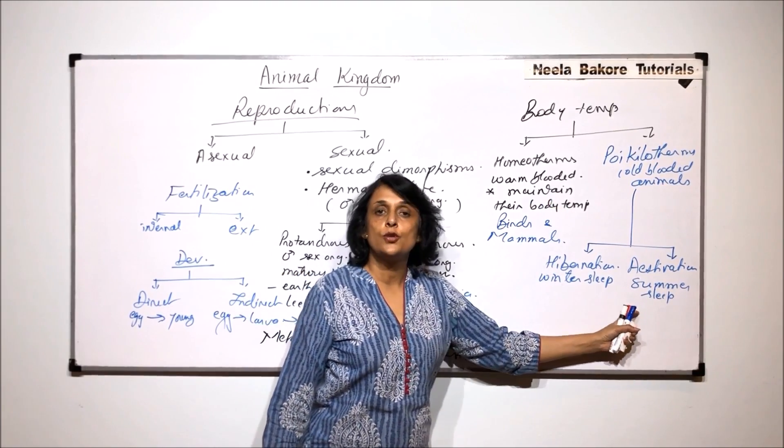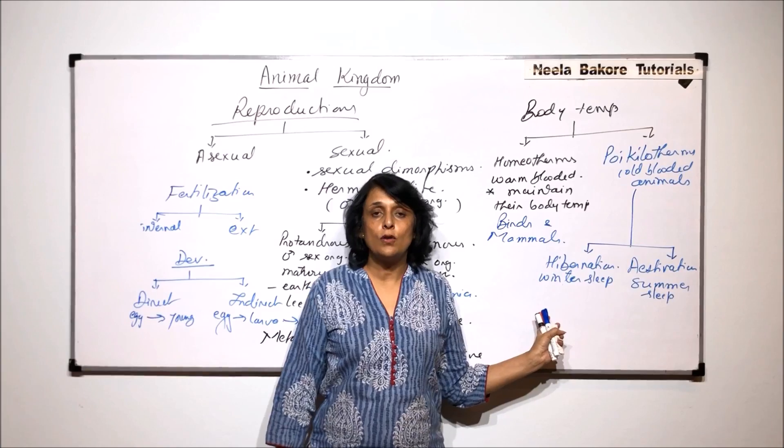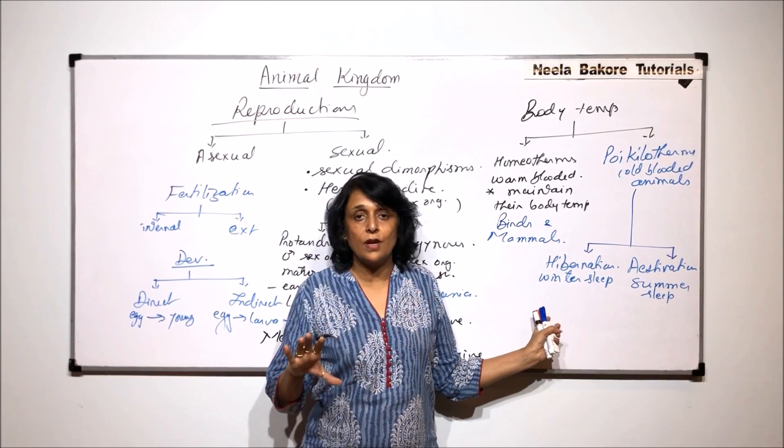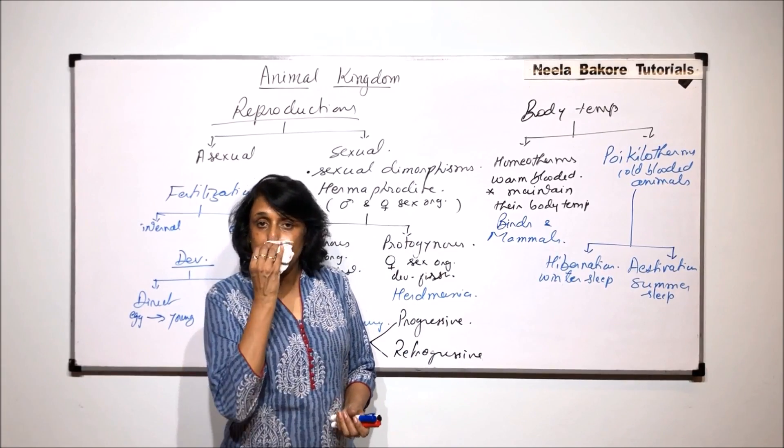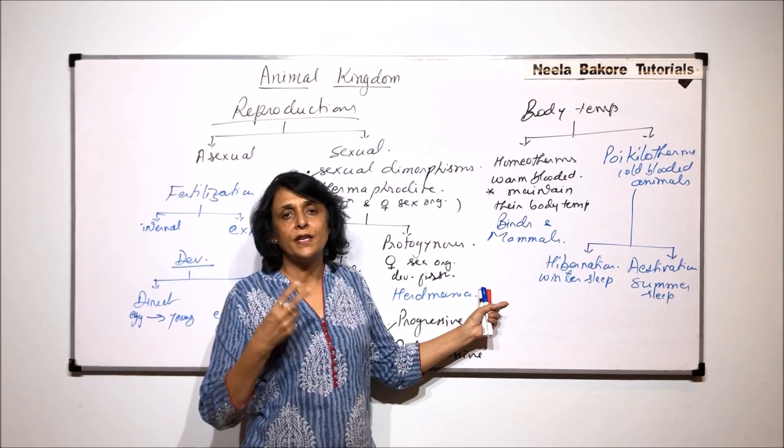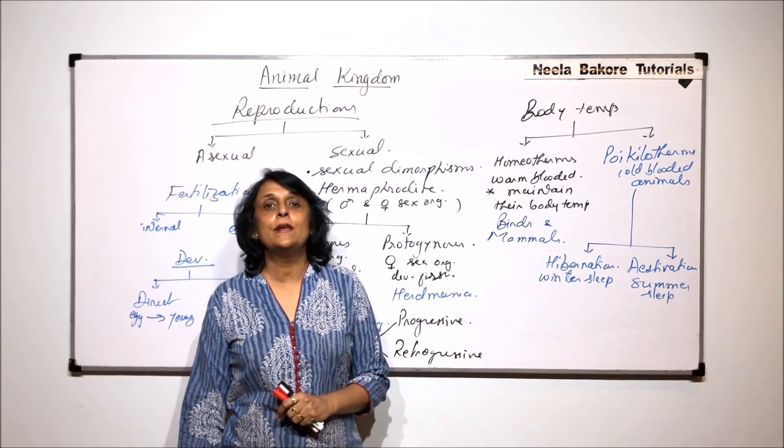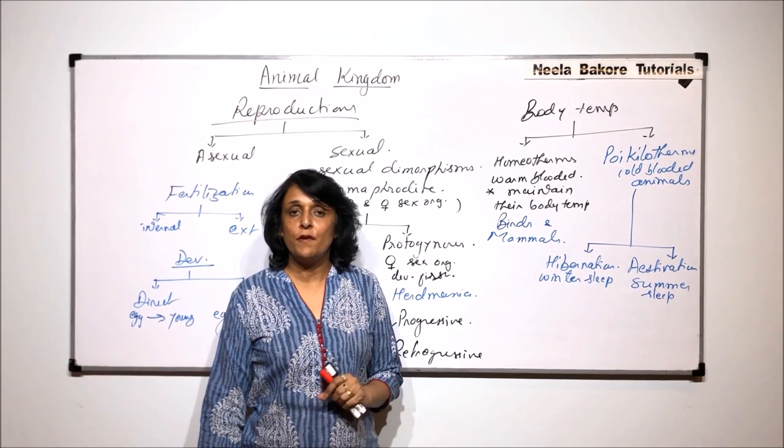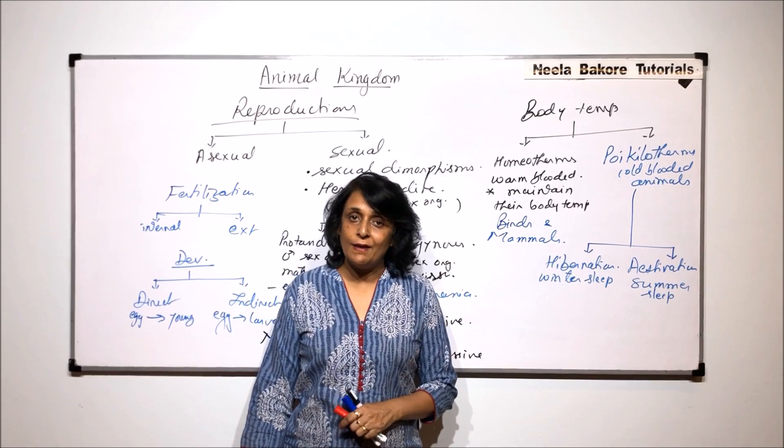So poikilotherms, they show these type of adaptations. So this is what we have talked of and it is under all introductory part. We have seen that animals can be classified on the basis of various processes, the body cavity, skeleton and everything. Now in the next part, we will see the overall classification of the animal kingdom and then we will start with the phylums.